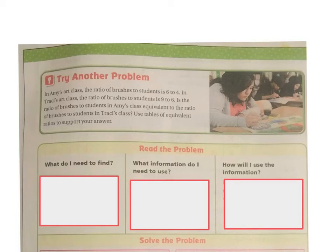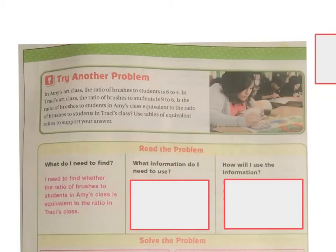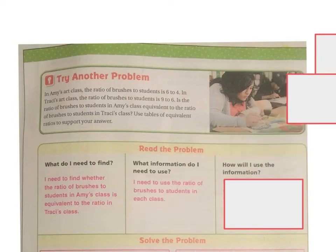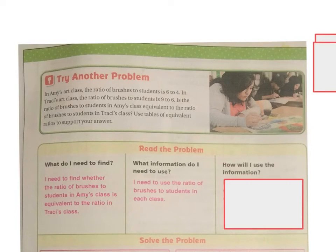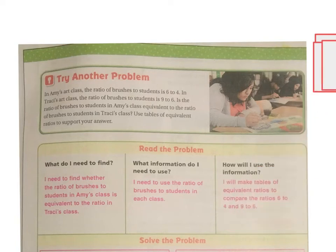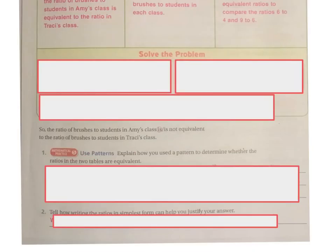So what do I need to find out? Well, I need to find out whether the ratios of brushes to students in Amy's class is equivalent to the ratio in Tracy's class. What information do I need to use? I need to use the ratio of brushes to students in each class. So six to four and nine to six. How will I use that information? I'm going to make equivalent table ratios to compare six to four and nine to six.